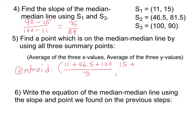And then the y will be 15 plus 81.5 plus 90, all divided by 3, again because we're averaging three numbers.